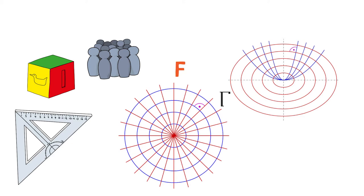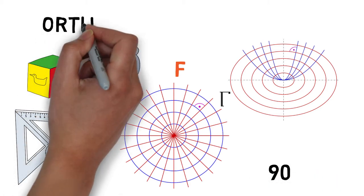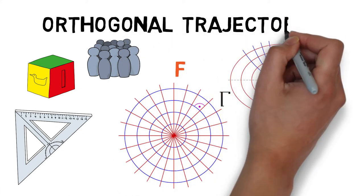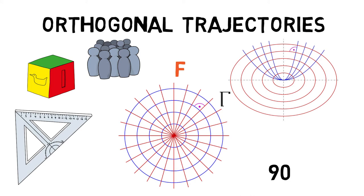It is important to note that we are not insisting that gamma should intersect every member of F, but if they intersect, the angle between their tangents at every point of intersection is 90 degrees. Such a family of curves gamma is called orthogonal trajectories of the family capital F, that is, at common point of intersection the tangents are orthogonal.